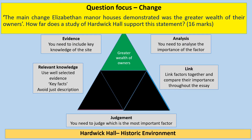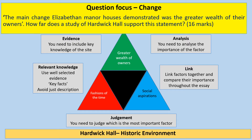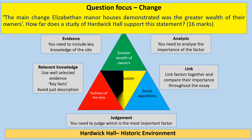Think about your planning in terms of a triangle. They actually give you the first factor to look at, which is the greater wealth of the owners — write about that as your first paragraph. Second paragraph, you need a disagree paragraph, perhaps looking at the fashions of the time. A third paragraph might be around the social aspirations of the Elizabethan gentry. Then your final paragraph is your conclusion.